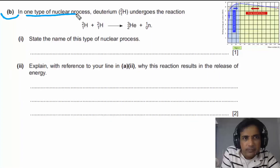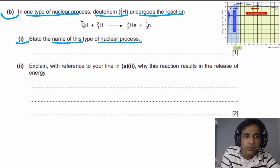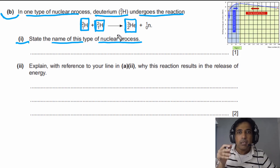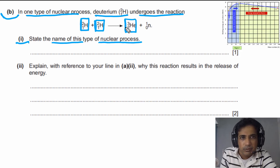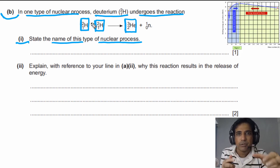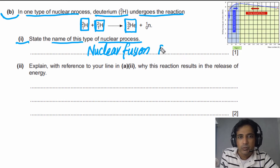For part D, it is given that deuterium undergoes a nuclear reaction. For part 1, we need to state the name of this nuclear process. We have two deuterium nuclei that fuse together to form a helium nucleus. These two lighter nuclei combine to form a heavier nucleus, so this process is nuclear fusion. Writing 'fusion' earns one mark.